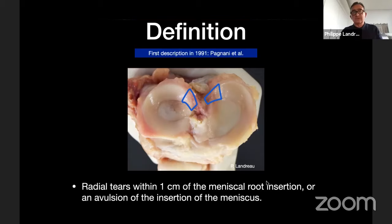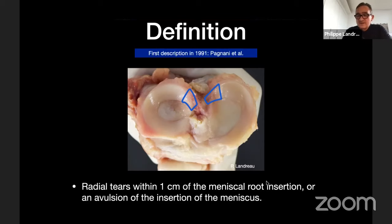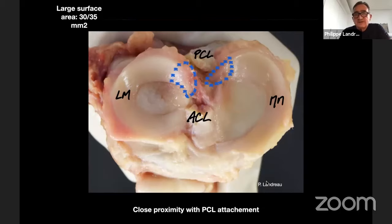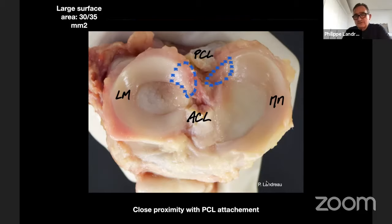Regarding definitions, the first description was recent — in 1991 by Pagnani. He defined meniscus root tears as radial tears within one centimeter of the meniscus root insertion, or an avulsion of the insertion. The insertion of the meniscus is quite large — studied anatomically in the lab — making it surgically challenging to reproduce the anatomical insertion of the posterior root.